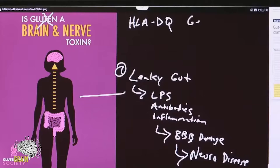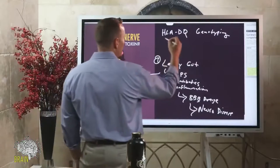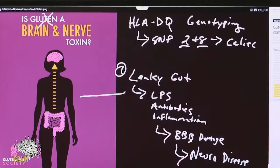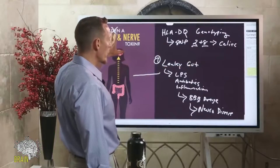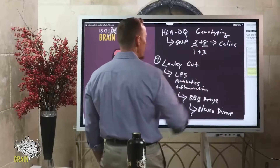HLA DQ genotyping. It's important that you ask for the right kind of HLA DQ genotyping. If you're going to one of these genetic testing mills online, what they don't do is run a SNP test — they're looking for what are called HLA DQ twos and eights, because of their association with celiac disease. Unfortunately, people with DQ twos and eights don't oftentimes manifest their gluten exposure as neurological damage. The ones we're concerned with are those with HLA DQ one and three.